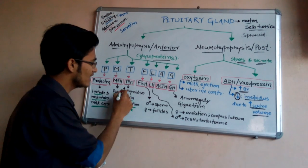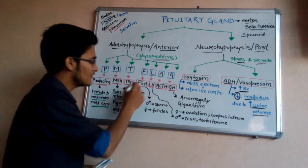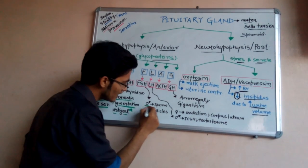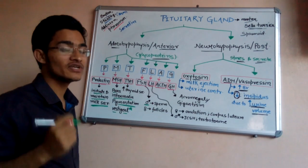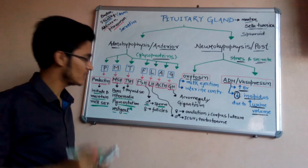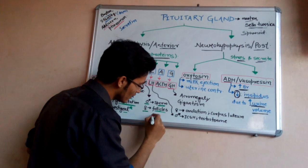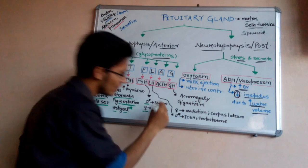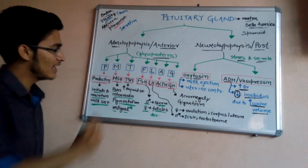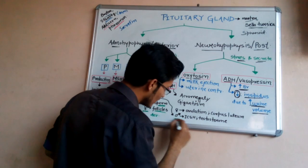T stands for TSH, the thyroid-stimulating hormone, which as the name indicates increases thyroid secretion. F stands for FSH, the follicle-stimulating hormone. In males, its function is spermatogenesis, which is important for sperm production, and in females it is important for the development of follicles.